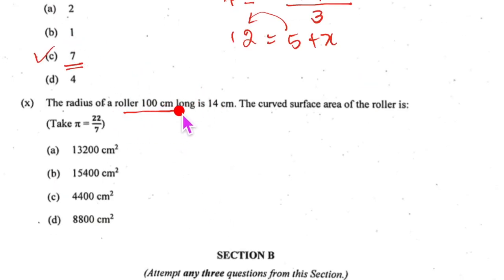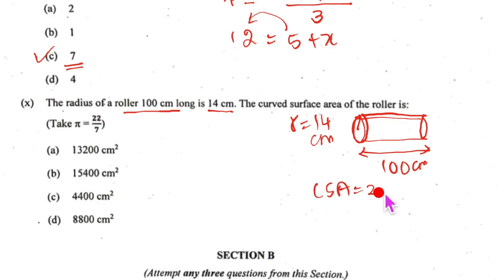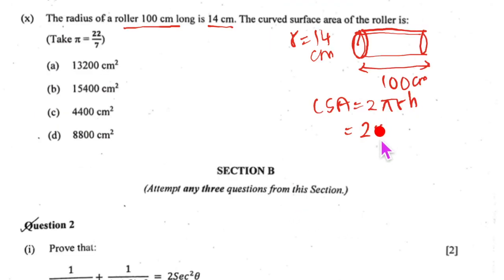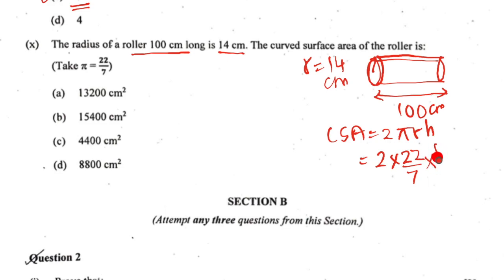The radius of a roller 100 centimeter long is 14 centimeter. So we have the roller which is like so and the radius is 14 centimeter and from here to here this is 100 centimeter. Now curved surface area will be 2 pi RH. So CSA will be 2 into 22 upon 7 into radius is 14 and H is 100. So we will have 7 going twice here. So we have 8800 centimeter square and that is our option D and that finishes our section A.